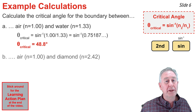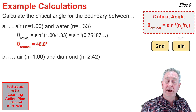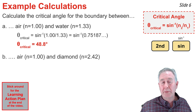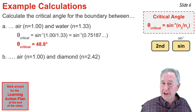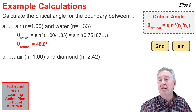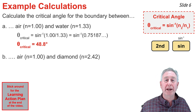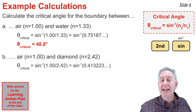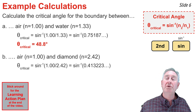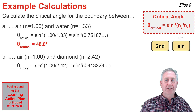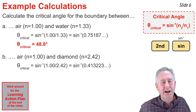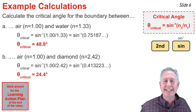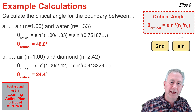Now let's repeat it for the air-diamond boundary. Once more, put the smaller index of refraction value on top and the larger one on the bottom, evaluate the ratio, and then take the inverse sine to find the critical angle for the diamond-to-air boundary.